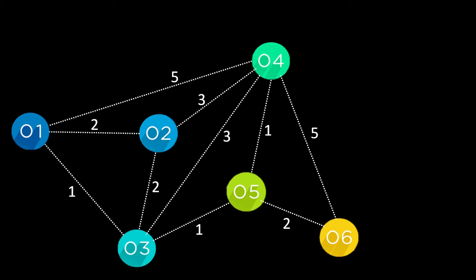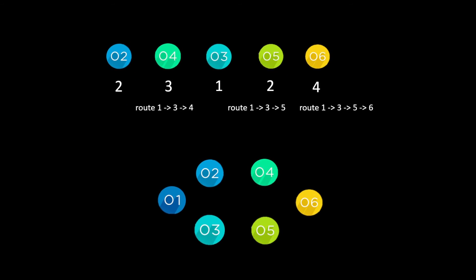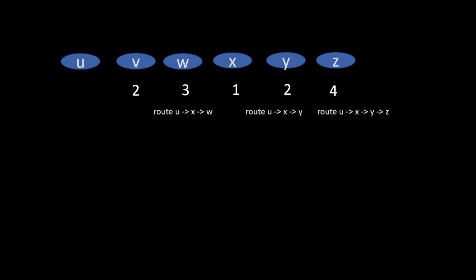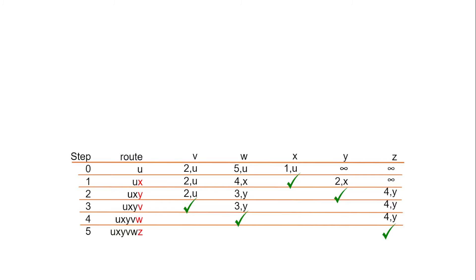We now have all the minimal costs — the different routes and the costs of those routes. Our numbers match the network that is the commonly used example. These nodes are normally written as the letters u, v, w, x, y, and z rather than numbers, so let's have a look at that.